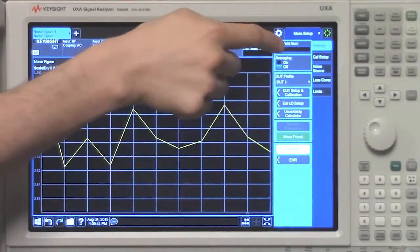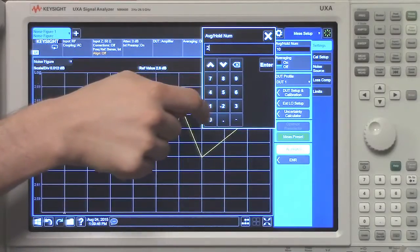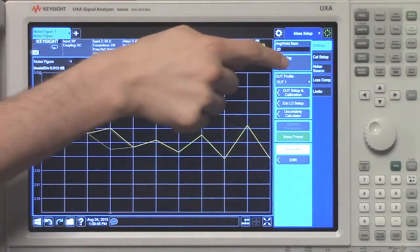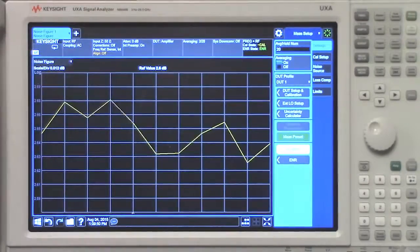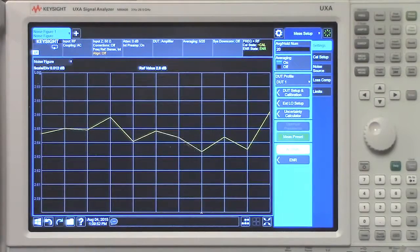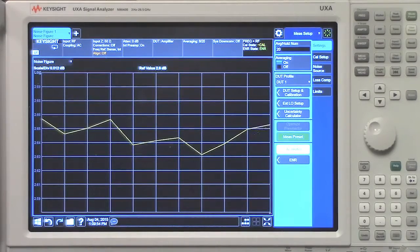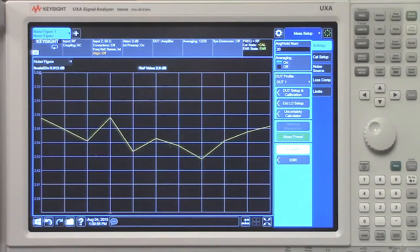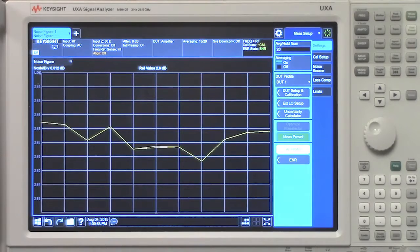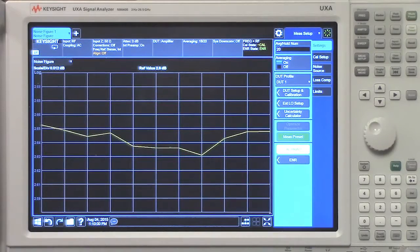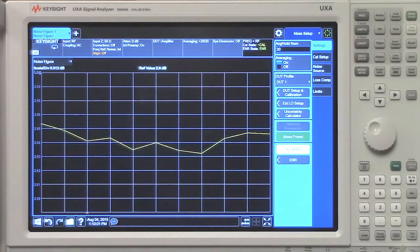So let's set the average number to 20 and toggle it to on. Now the trace is going to slowly update because it's keeping track of the previous traces and averaging all those together. This is a more interactive view but it takes a little longer to converge to a more consistent trace.